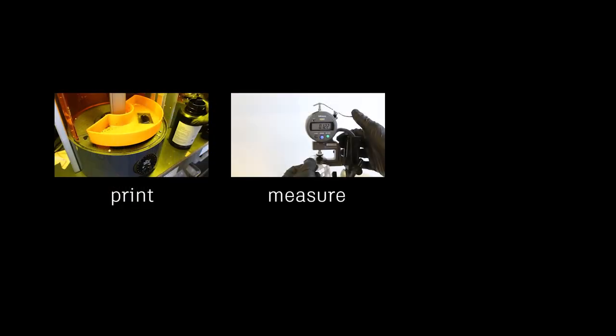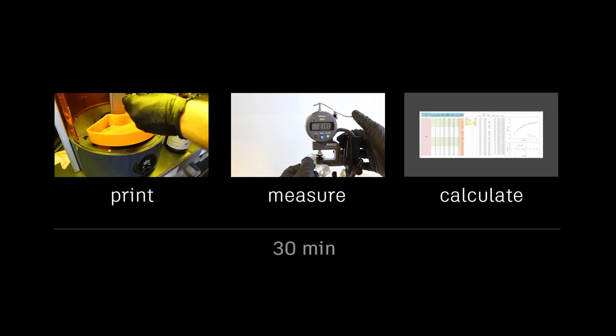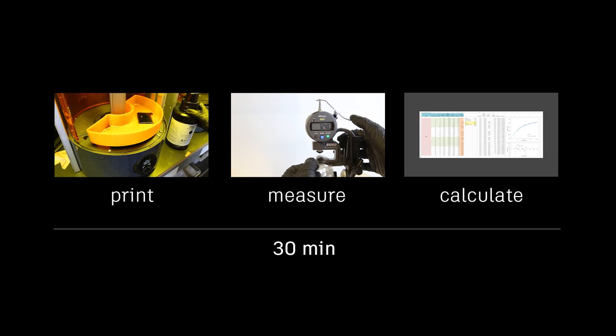Printing the panels, measuring their thickness, and calculating an exposure time takes about 30 minutes on Ember. This process works well for a wide range of 3D printable resins.